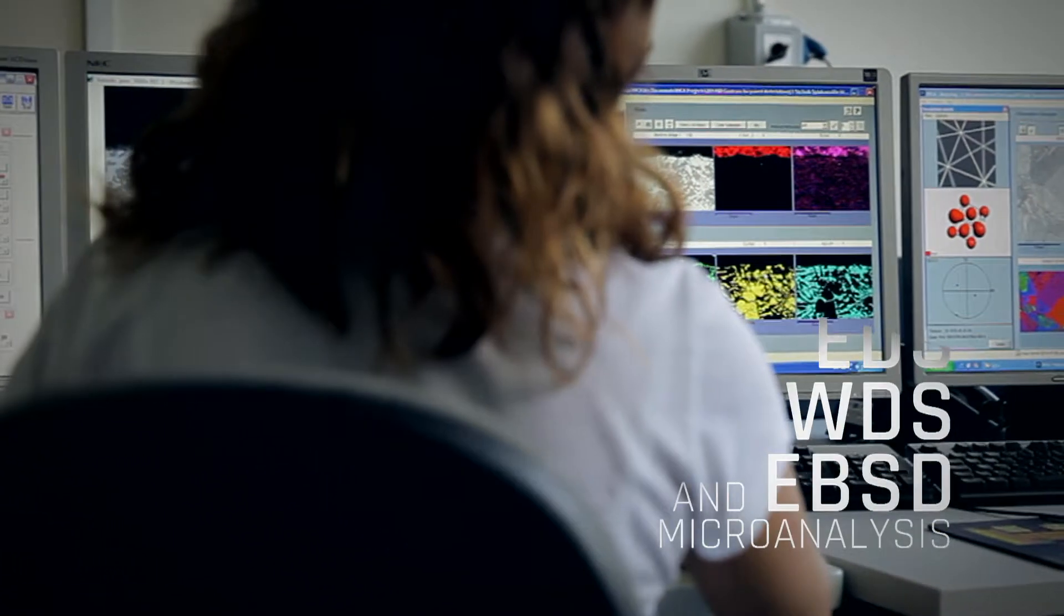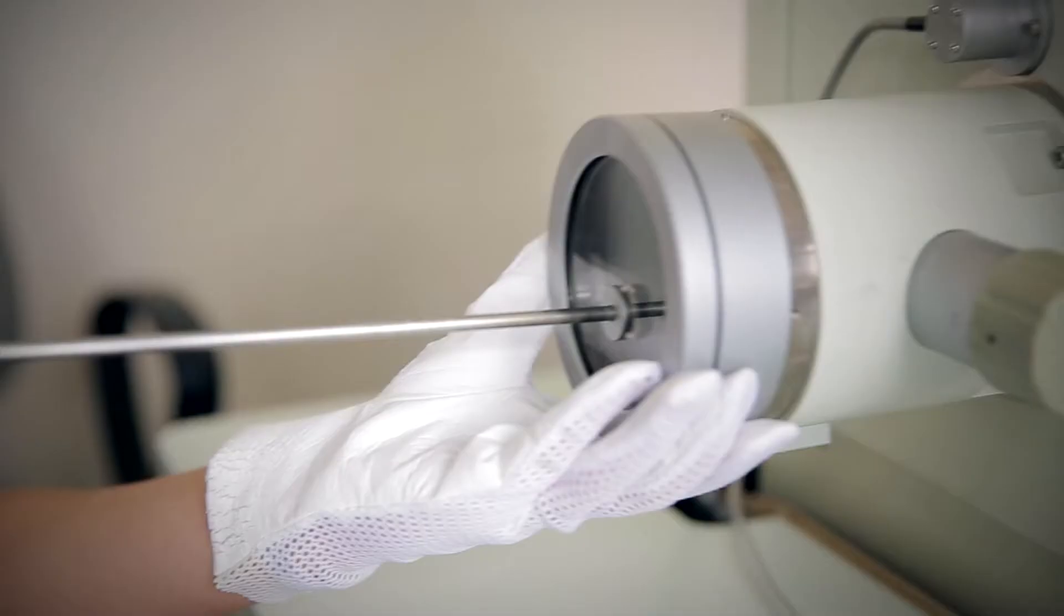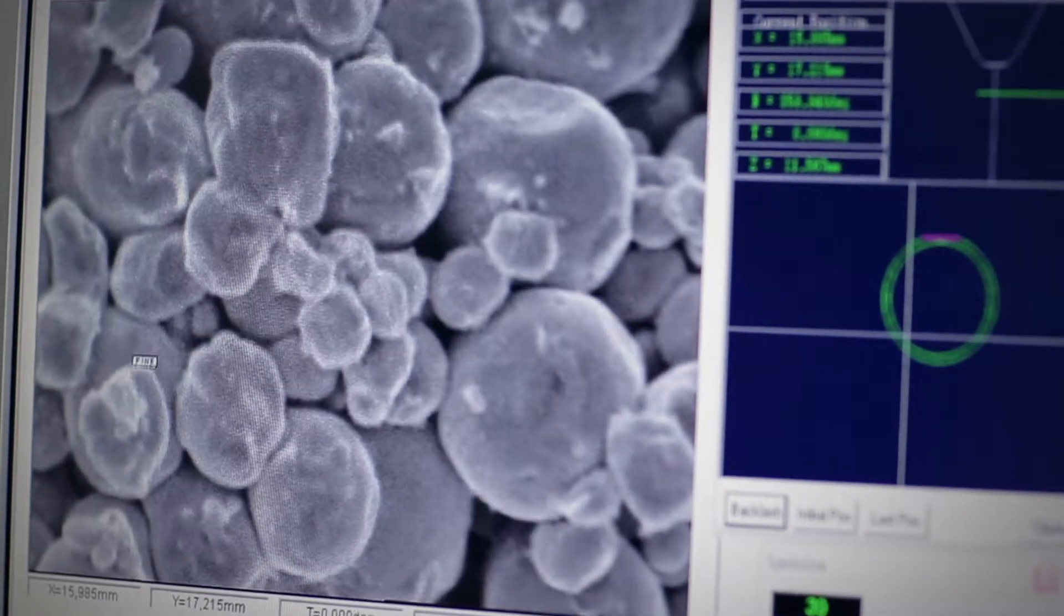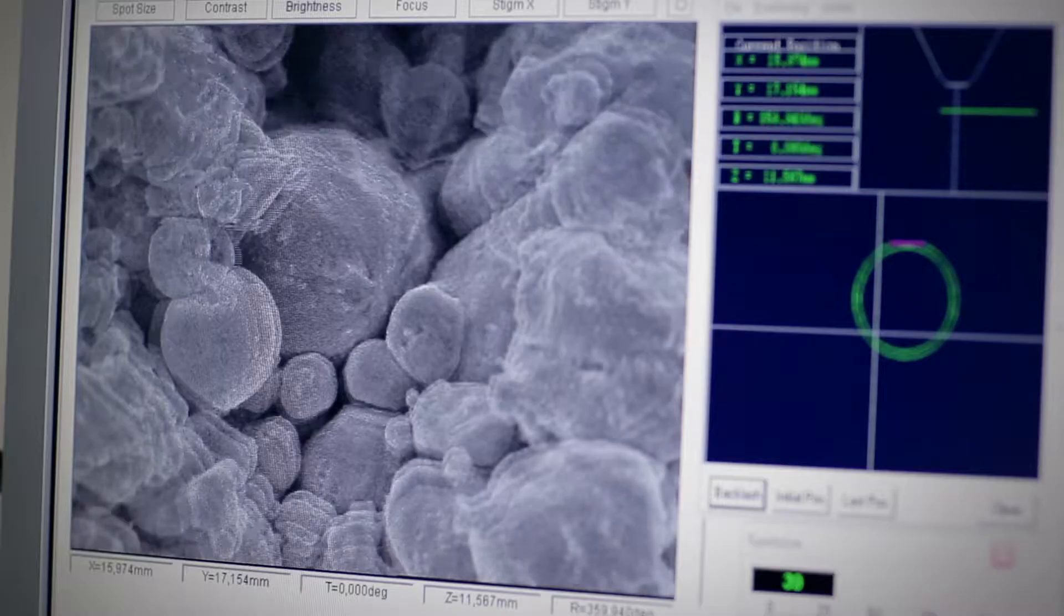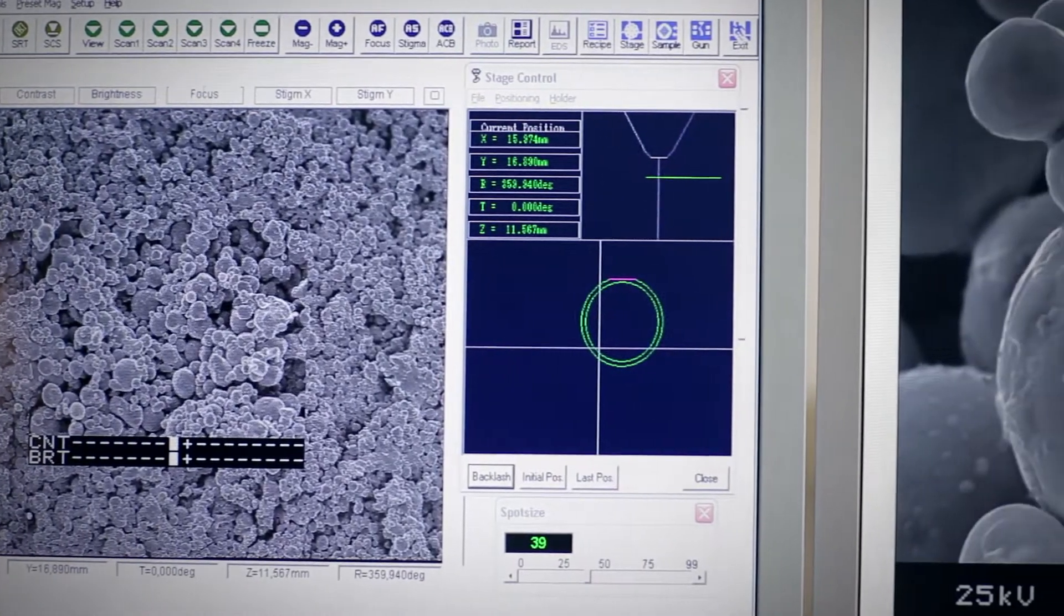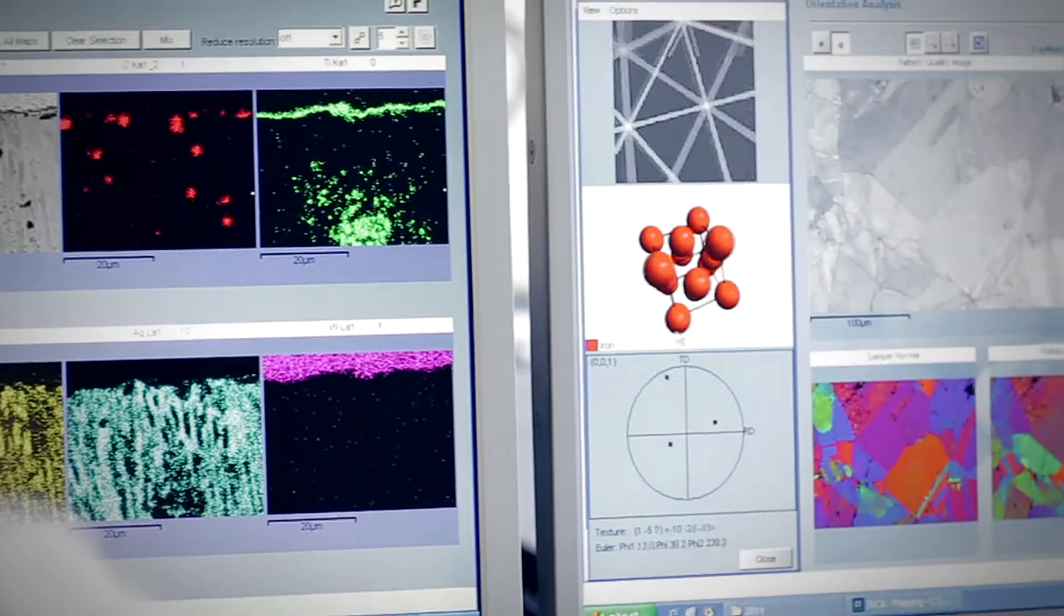Material microstructure analysis is performed with a scanning electron microscope. Evaluations are possible in high and reduced vacuum. Microscope accessories include a kit of spectrometers for qualitative and quantitative microanalysis of element contents and a system for electron backscatter diffraction analysis.